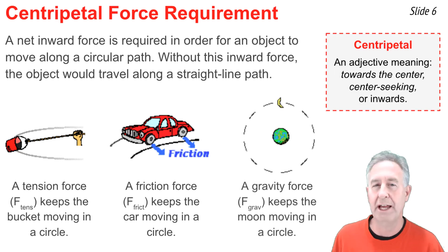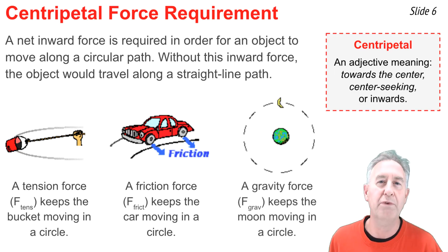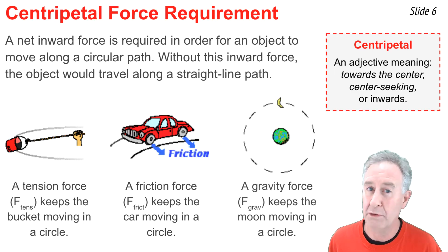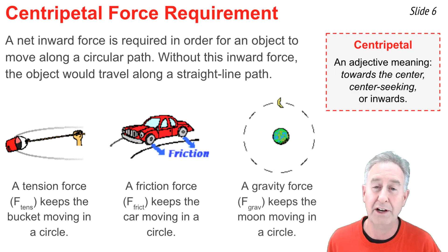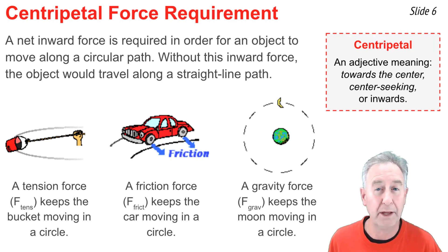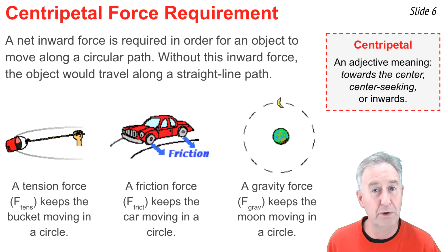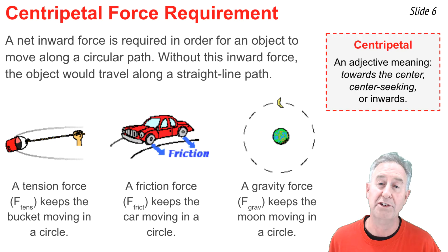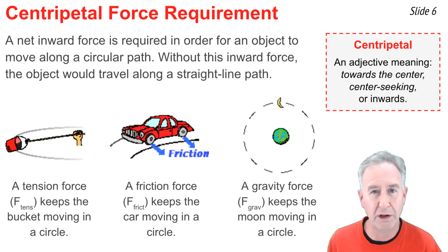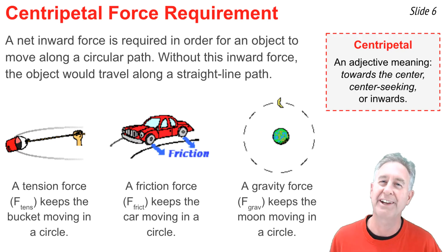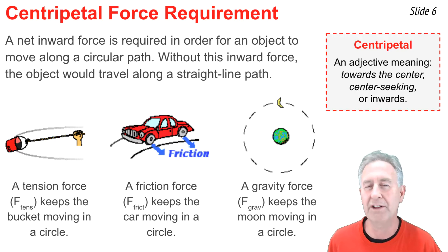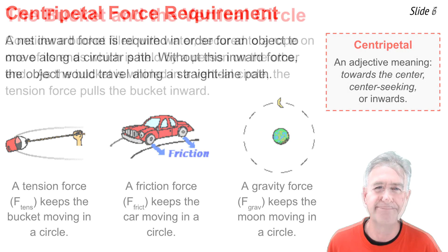In the last example, what force acts centripetally upon the moon to cause it to orbit the Earth in a near circular path? The answer is the force of gravity, which acts on the moon, pulling it inwards at all points along its path so that it can travel in a circle.